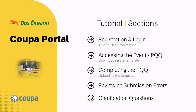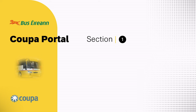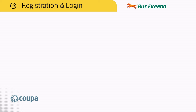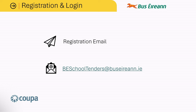Section 1: Registration and Login. At this stage, you should have received a registration email from COOPA and hopefully you have managed to successfully register on the system. However, if you are still having difficulty with the registration process, please contact beschooltenders at busearn.ie and a member of the procurement team will assist you.